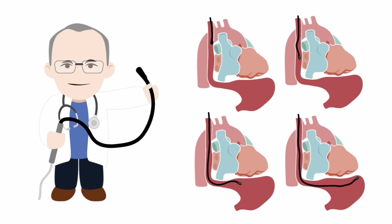Trans-esophageal echo views are often divided into mid-esophageal views, transgastric views, and aortic views, and these are obtained from a number of different probe positions.